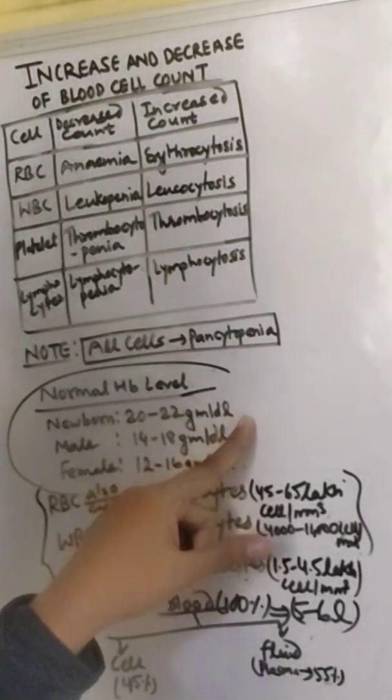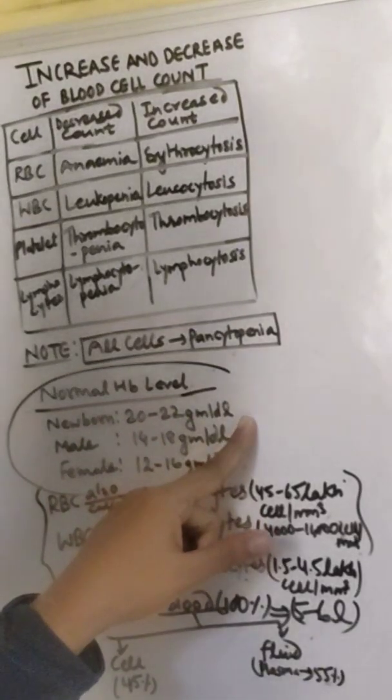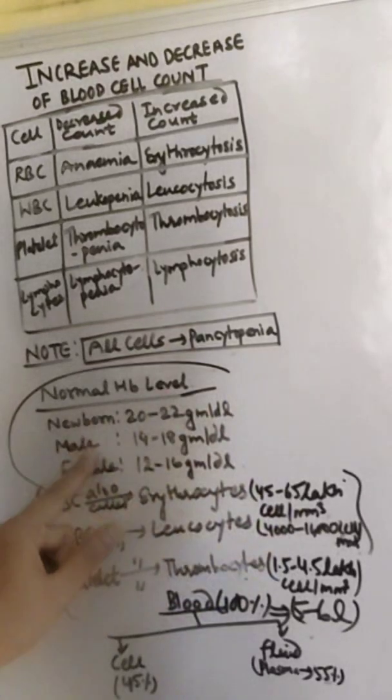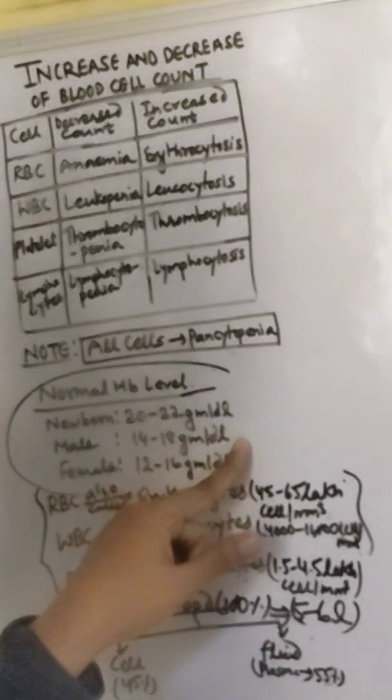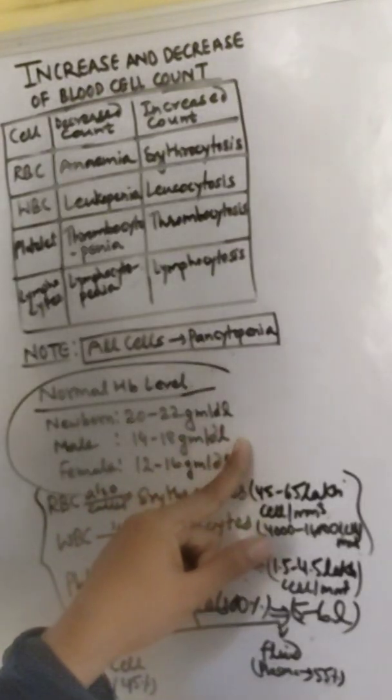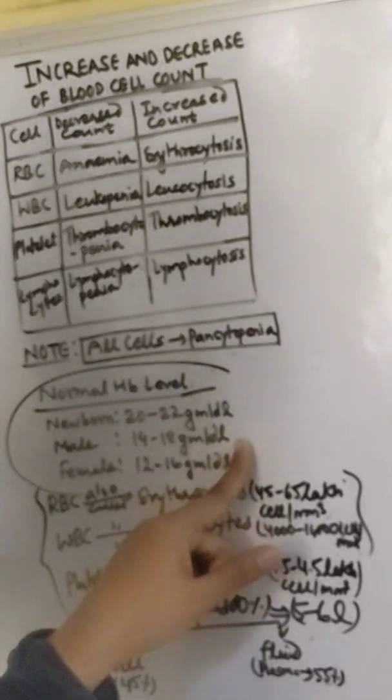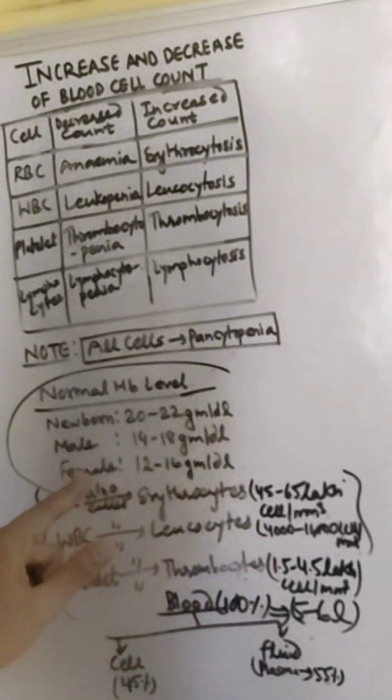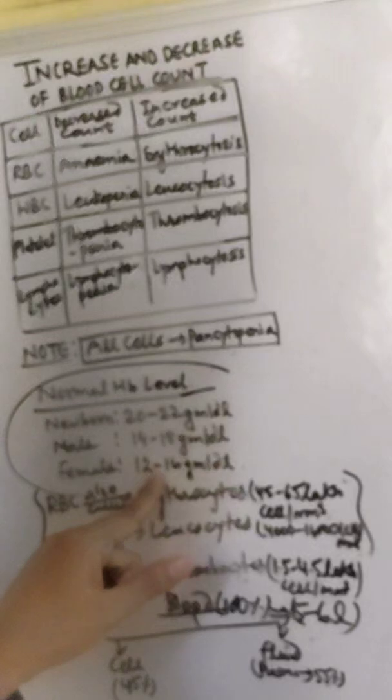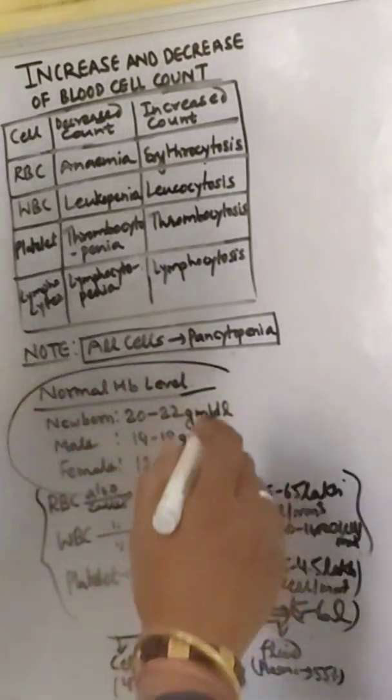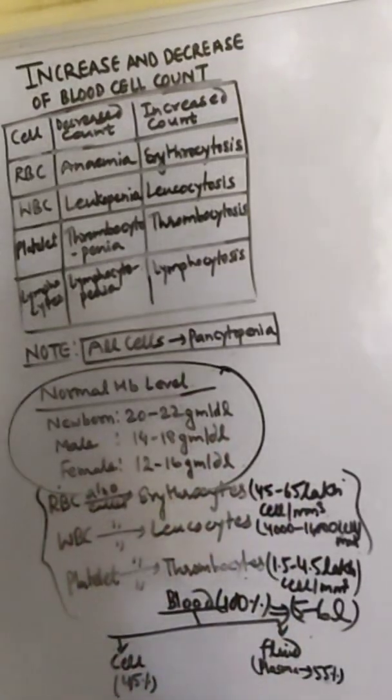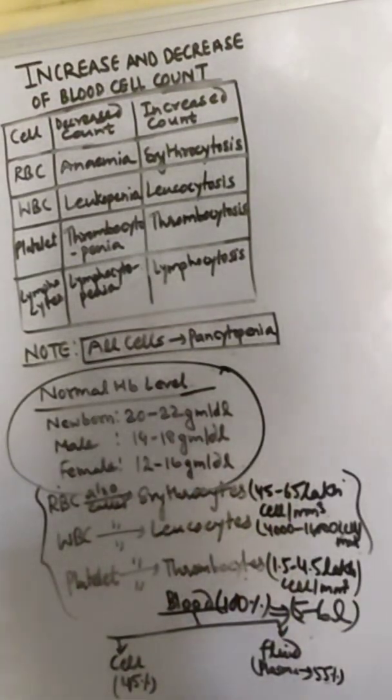Newborn consists of 20 to 22 grams per deciliter. Male consists of 14 to 18 grams per deciliter. In some books it is written as 13 to 18 grams per deciliter, it is also okay. Female consists of 11 or 12 to 16 grams per deciliter. So this is the composition of hemoglobin present in blood.